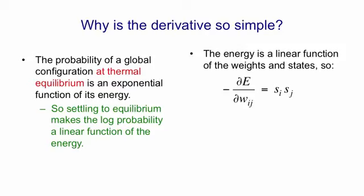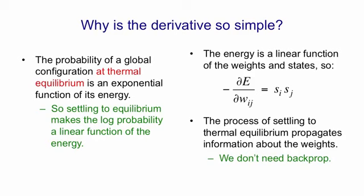In fact, the relationship is very simple. It's that the derivative of the energy with respect to a particular weight, w_ij, is just the product of the two activities that that weight connects. So what's happening here is the process of settling to thermal equilibrium is propagating information about weights. We don't need an explicit backpropagation stage.